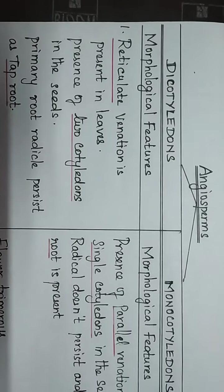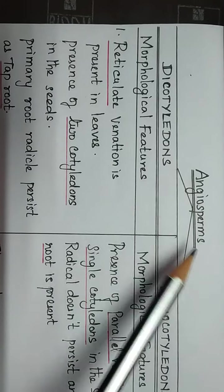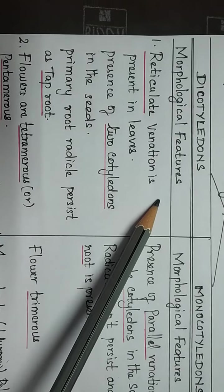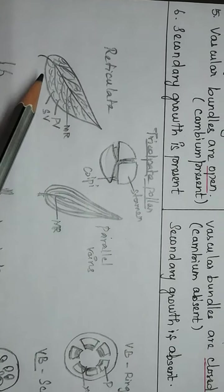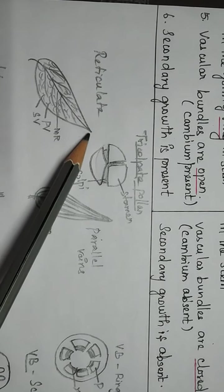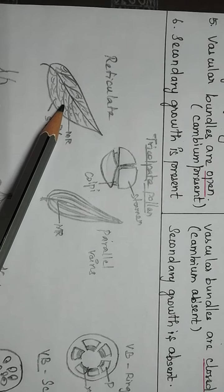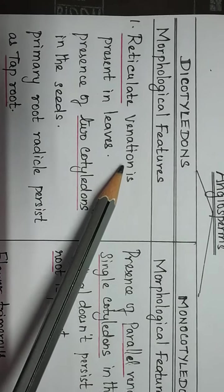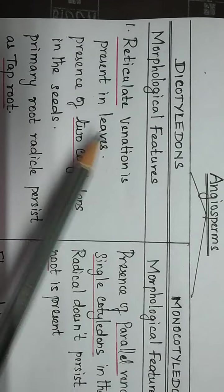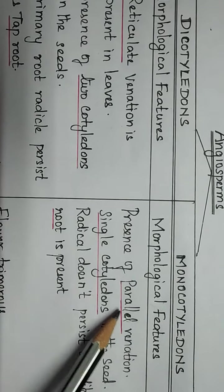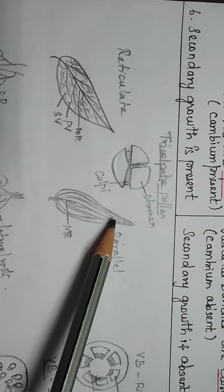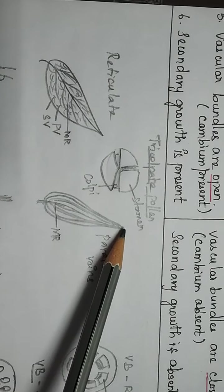Next we are going to see the difference between dicotyledons and monocotyledons. In dicotyledons, reticulate venation is present in the leaves — that is, a primary vein, secondary vein, and tertiary vein are present. This type of reticulate venation is found in dicotyledons. In monocotyledons, parallel venation is present — the midrib is present, all veins run parallel and touch at the tip region.